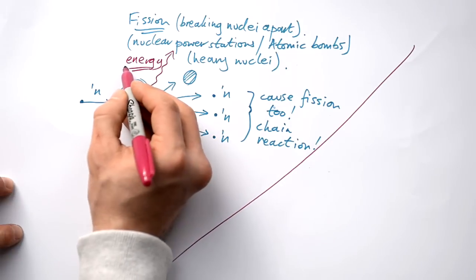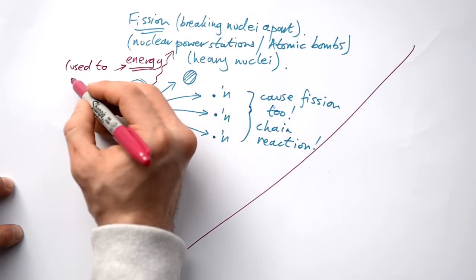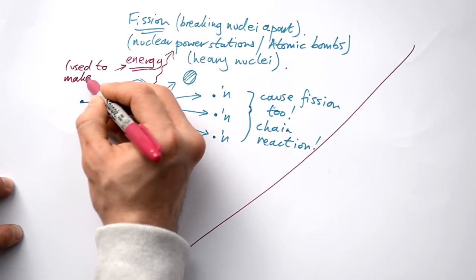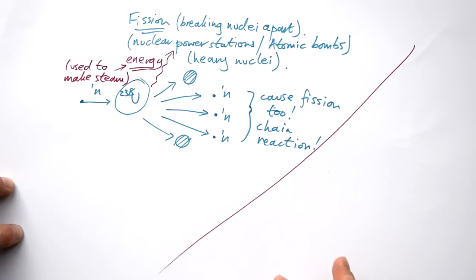Now in a nuclear power station, that's used to heat water and make steam. And then of course, that turns a turbine and that turns a generator. And then from then on, it works like a normal power station.